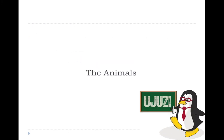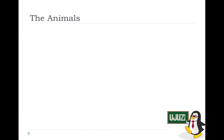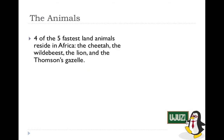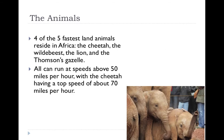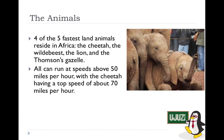Now for some of the animals found in Africa. Four of the five fastest land animals reside in Africa, including the cheetah, the wildebeest, the lion, and the Thomson's gazelle. They all have speeds of over 50 miles per hour, with the cheetah having a top speed of about 70 miles per hour.